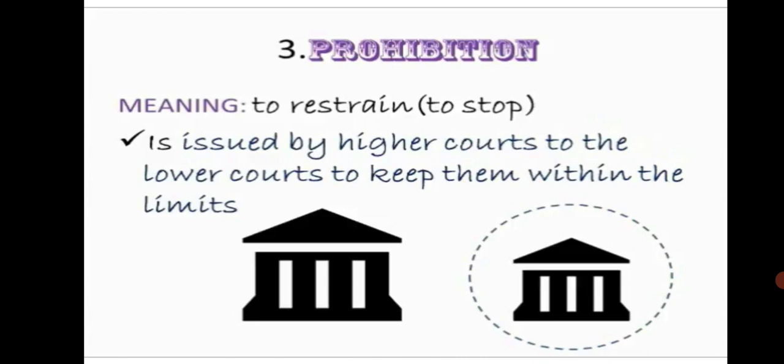The third writ is prohibition, meaning 'to restrain or to stop' — also known as a stay order. It is issued by higher courts to lower courts to keep them within their limits, preventing a subordinate court from exceeding its jurisdiction.